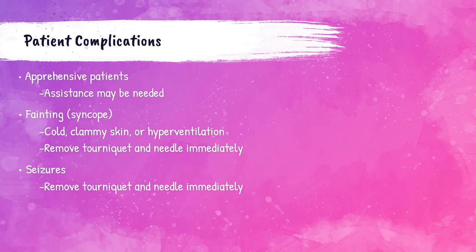A patient who becomes cold, has clammy skin, is sweating excessively, hyperventilating, feels lightheaded, dizzy, has vertigo, tunnel vision, nausea, or feels warm or cold may be about to faint. If a patient is experiencing these symptoms, the tourniquet and needle should be removed as soon as possible. If the patient does begin to pass out, the needle should be removed and the safety device activated. It's important to try to keep the patient from fainting, and if they do faint, it's important to keep them in the chair so they do not fall on the floor.